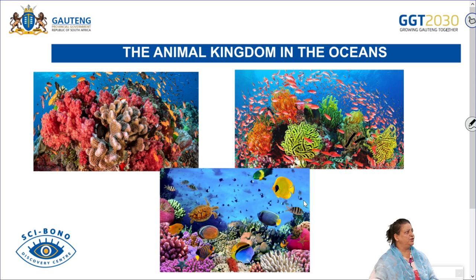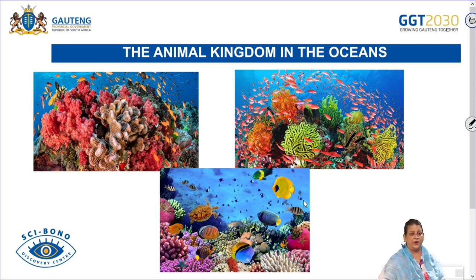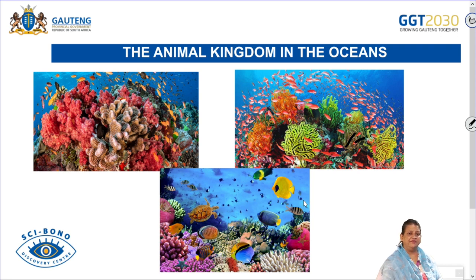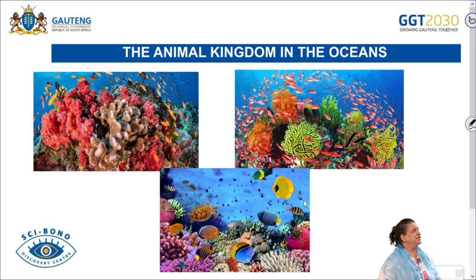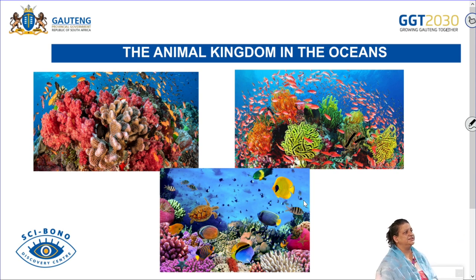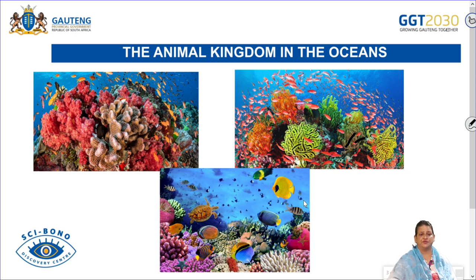This diagram shows some of these organisms as they appear in real life in the oceans. Most of them are aquatic. The Platyhelminthes, the amoeba, and even earthworms live in an aquatic mode of life — although the earthworm is terrestrial, it depends a lot on water for survival. Here we have the animal kingdom in the oceans — you can see corals, sea anemones, and fish, which form part of the Chordata.